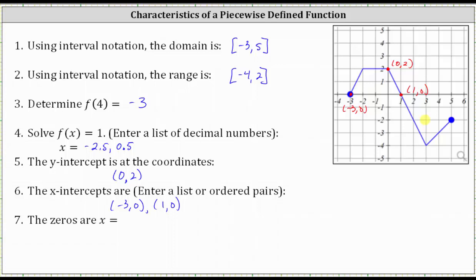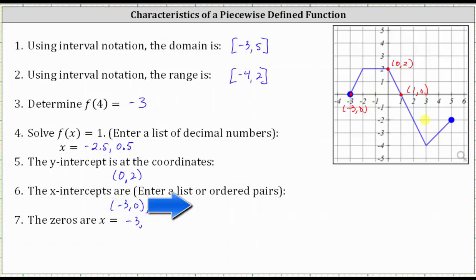Number seven, we're asked to find the zeros. Remember, the zeros are related to the x-intercepts. The zeros are the x-values for which the corresponding function value or y-value is zero. Since one x-intercept is negative 3, comma 0, we know when x equals negative 3, the y-value is 0, and therefore one zero is x equals negative 3. From the x-intercept of 1, comma 0, when x is 1, the function value is 0, and therefore x equals 1 is also a zero. So the zeros are x equals negative 3 and x equals positive 1.